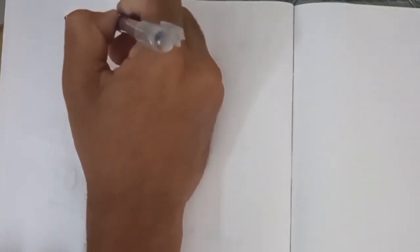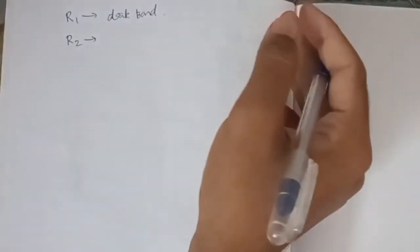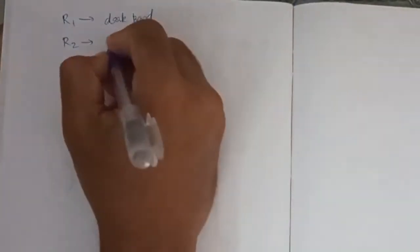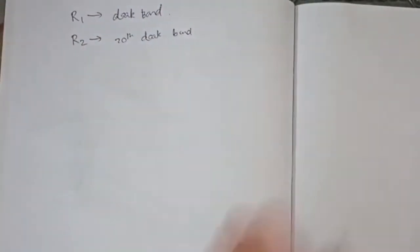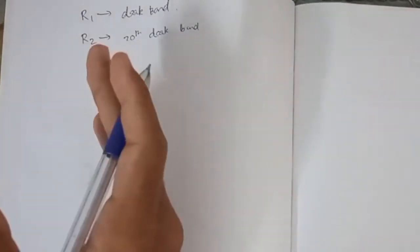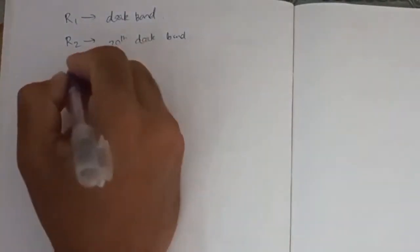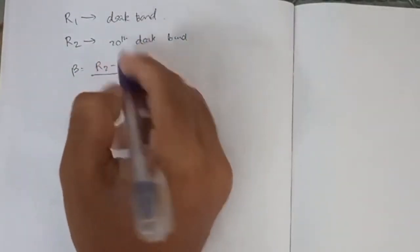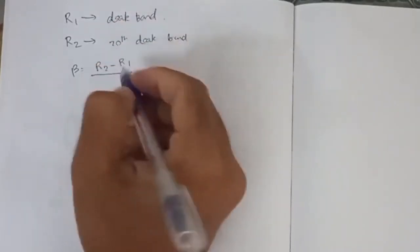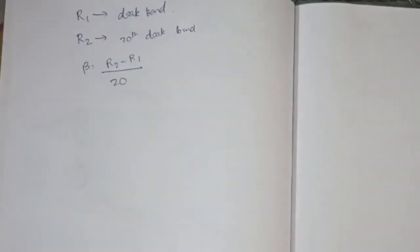We take a reading R1 for the first dark band and a reading R2 for the 20th dark band. The bandwidth beta is calculated as R2 minus R1 divided by 20.